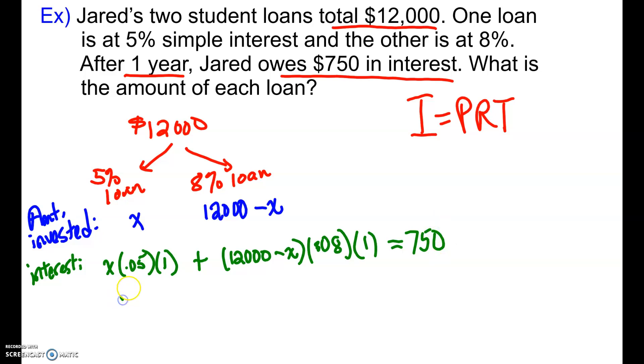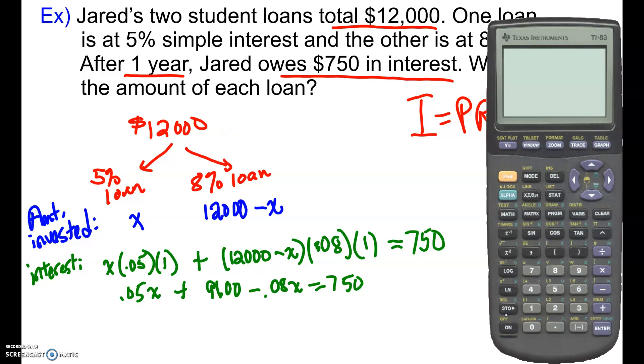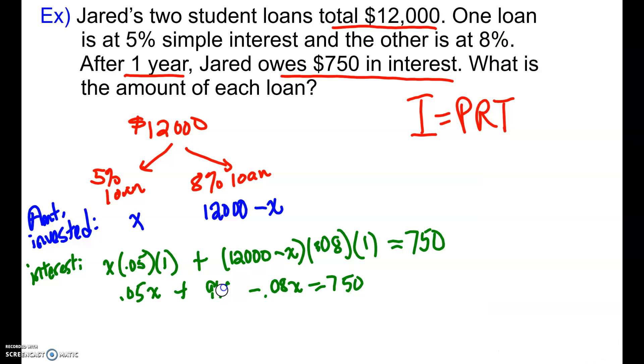A little clean up here. So this first one simplifies very nicely to 0.05x, plus, and then this is going to be 9,600 minus 0.08x equals 750. In fact, I'm going to double check myself because I don't trust myself here. So 12,000 times 0.08, 960. Good thing I checked, right? So let's fix that and correct it. 960. I thought that was too big of a number.